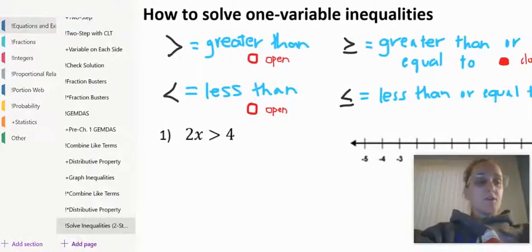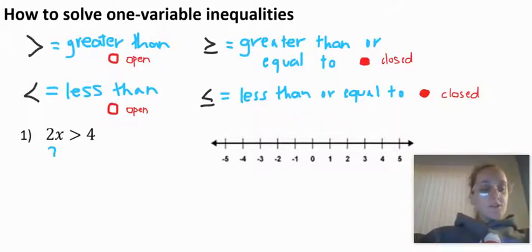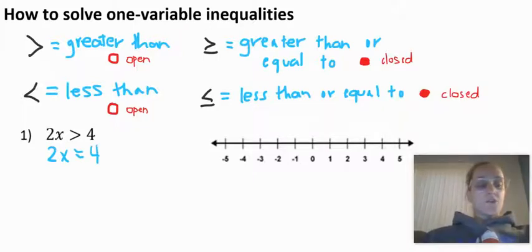So when I look here at number one, 2x is greater than 4. If I want, I'm just going to put an equal sign for the time being and just kind of think of it that way. So if I can solve an equation, I can solve an inequality.